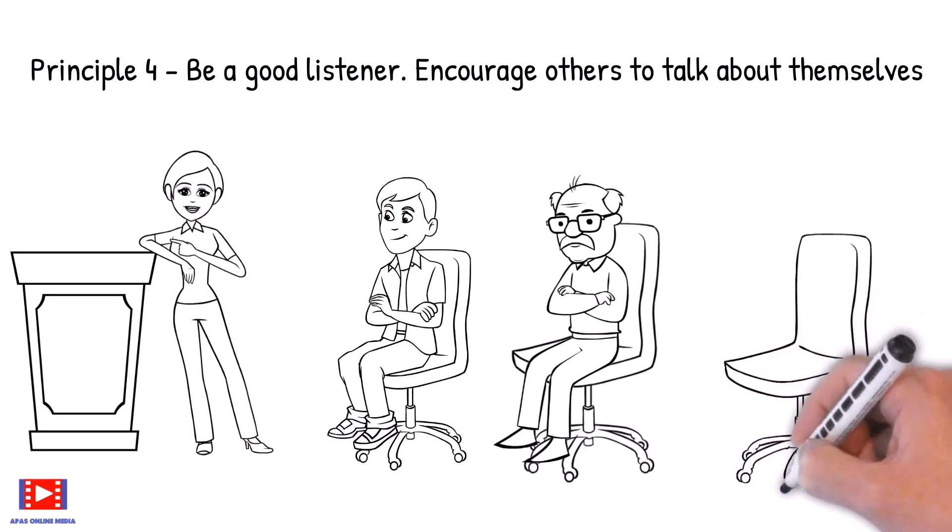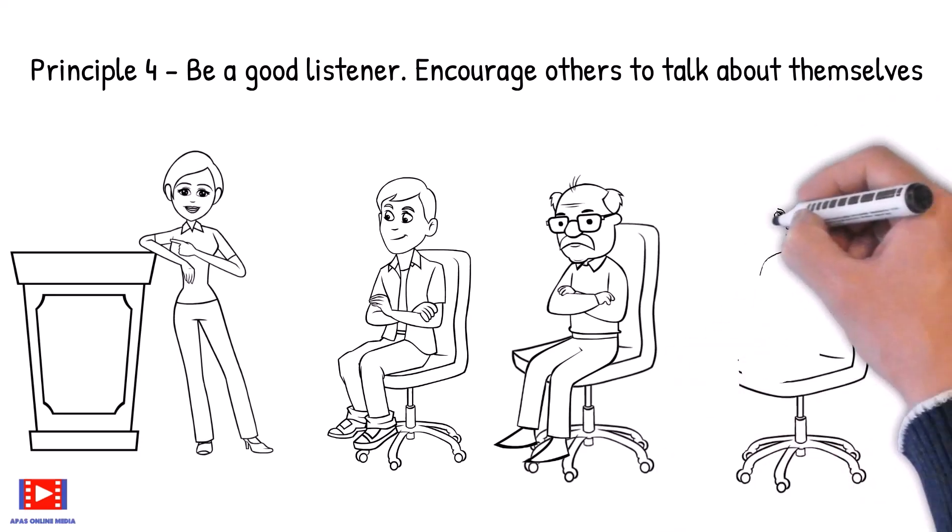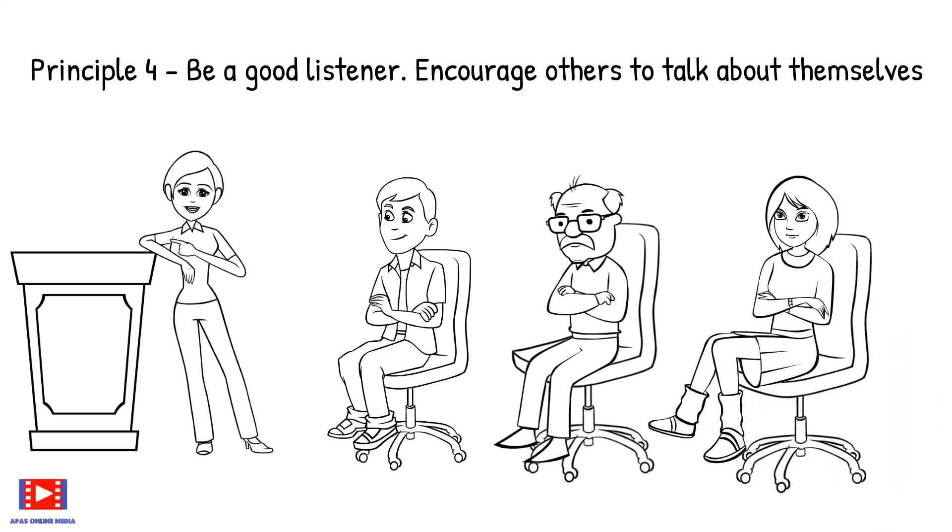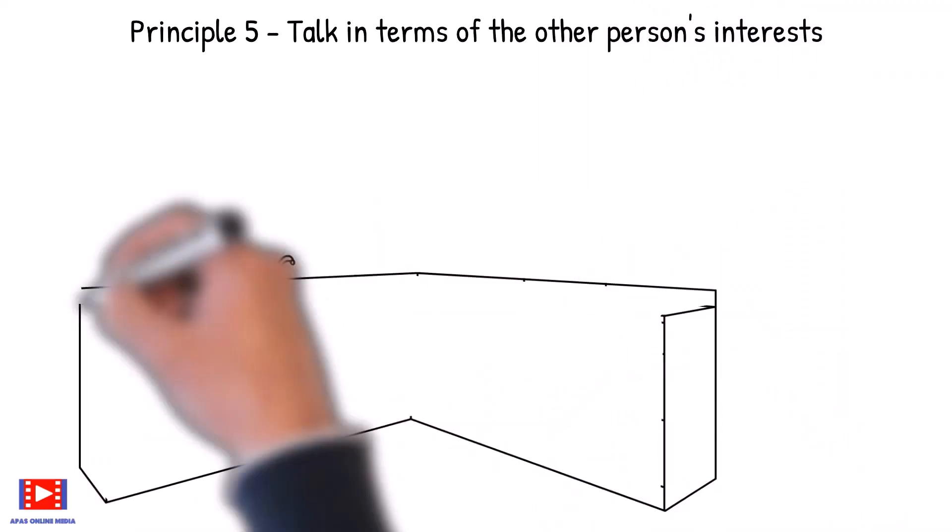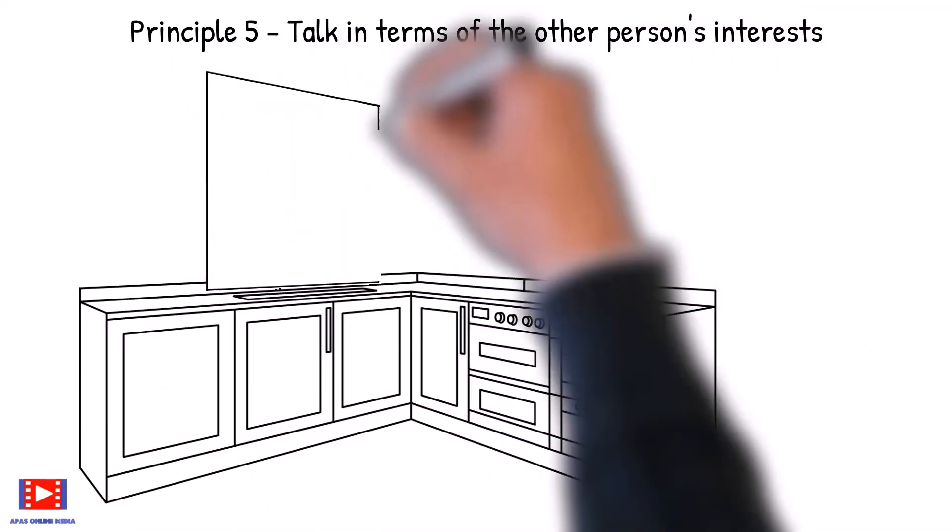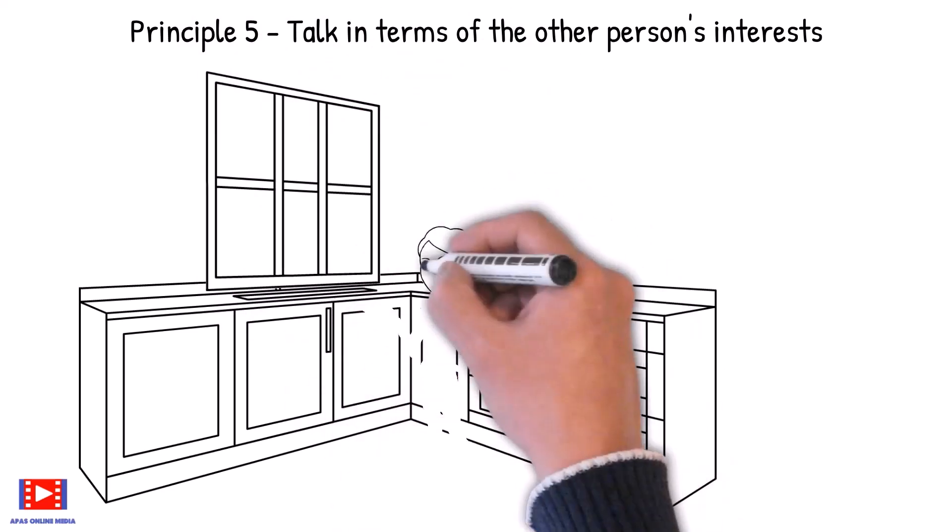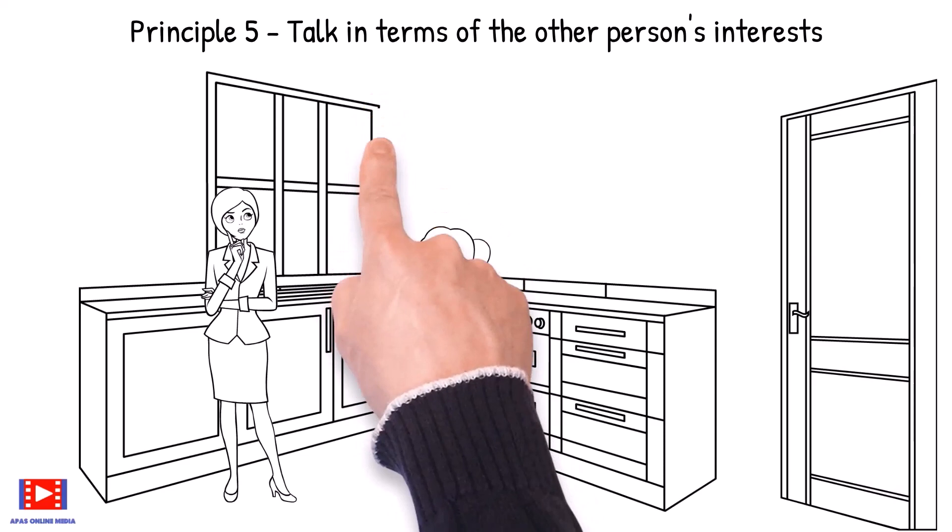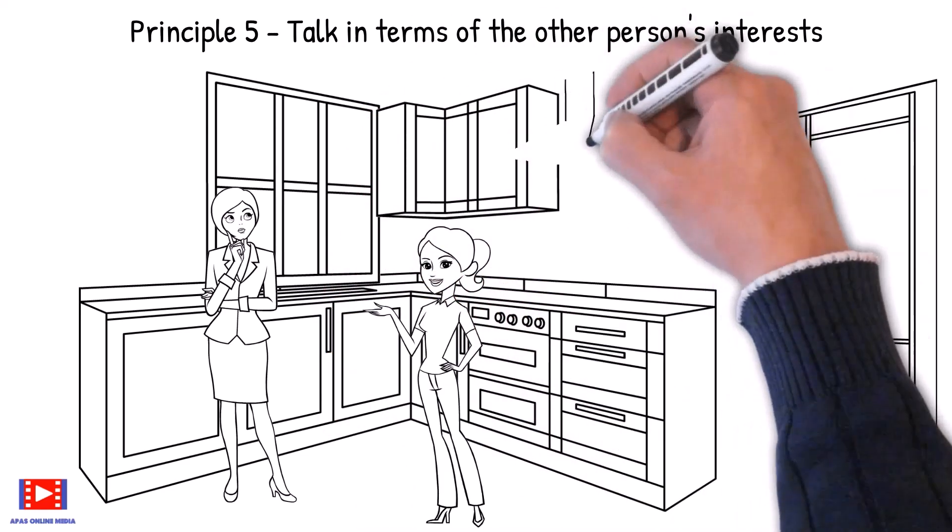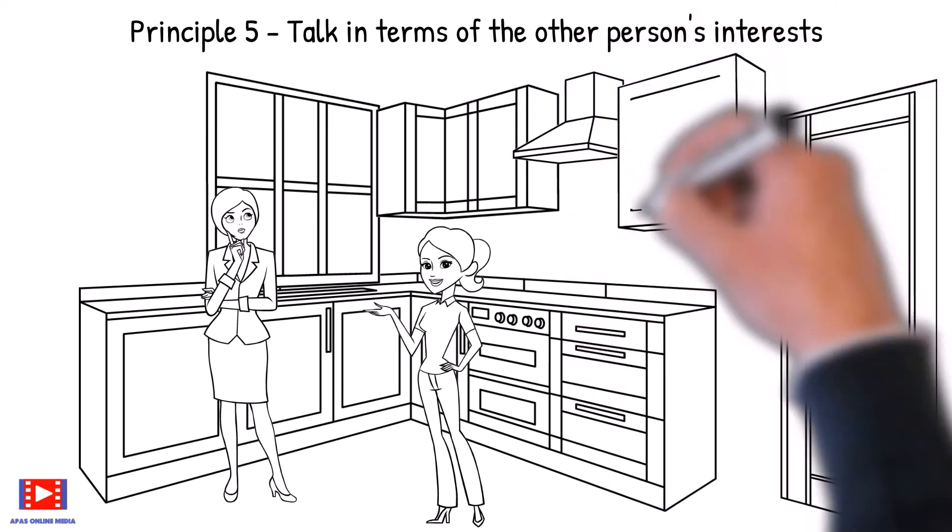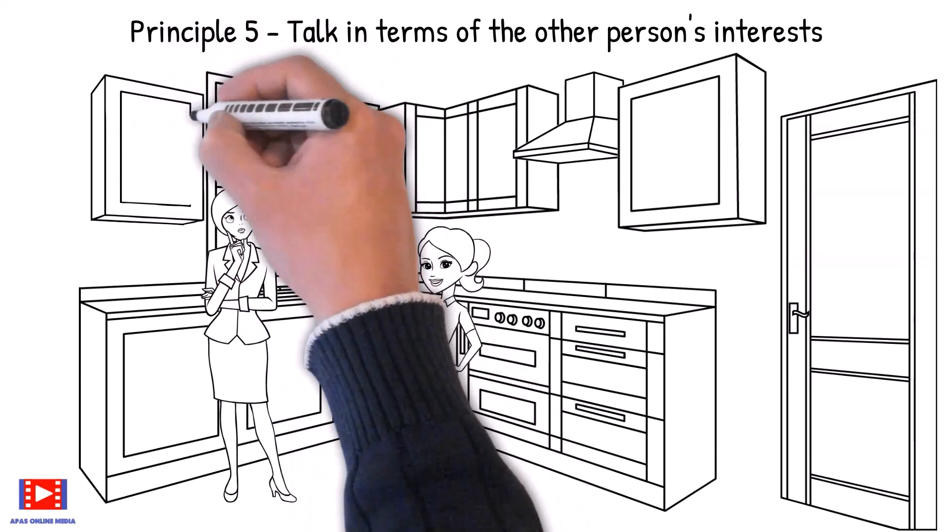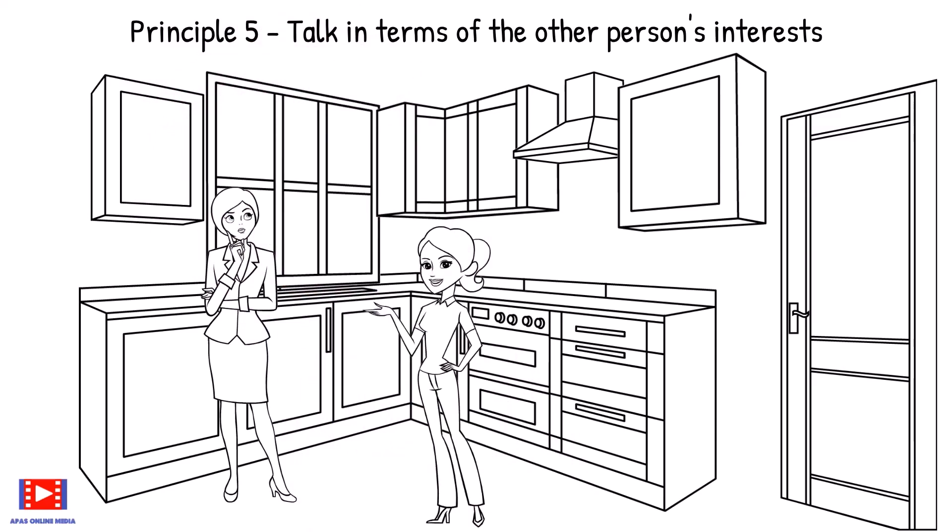Remember that the people you are talking to are a hundred times more interested in themselves and their wants and problems than they are in you and your problems. Principle 5: Talk in terms of the other person's interest. Everyone likes to talk on the topic of their interest. By listening carefully, we can understand the topic the other person is interested in.